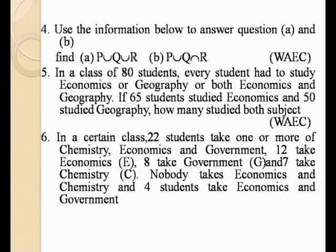Example number 6. In a certain class, 22 students take one or more of chemistry, economics, and government. 12 take economics, represented as E. 8 take government, represented as G. And 7 take chemistry.